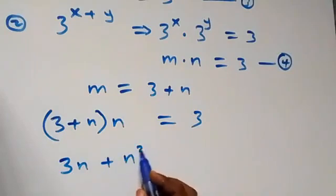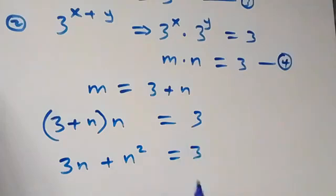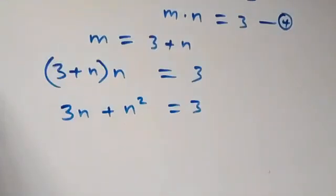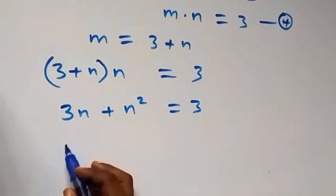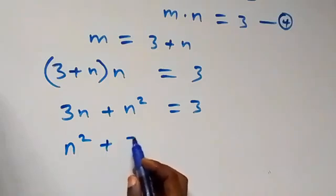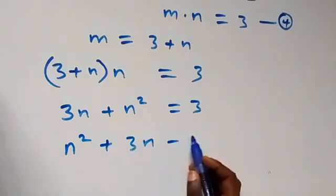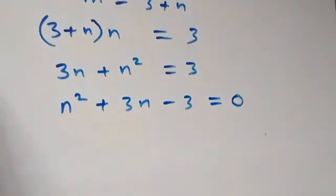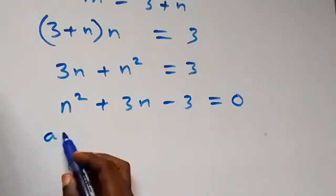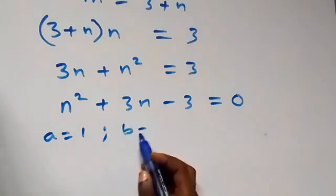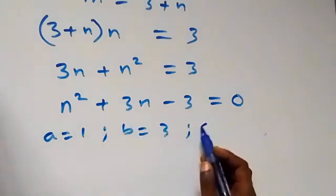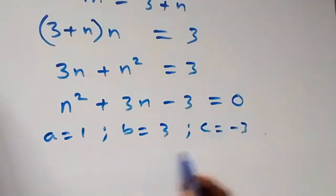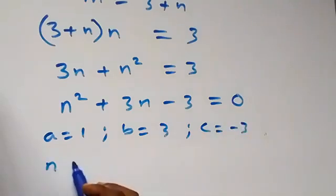Rearranging and bringing everything to one side gives us n squared plus 3n minus 3 equals 0. This is a quadratic equation where a equals 1, b equals 3, and c equals negative 3. We will solve using the quadratic formula.